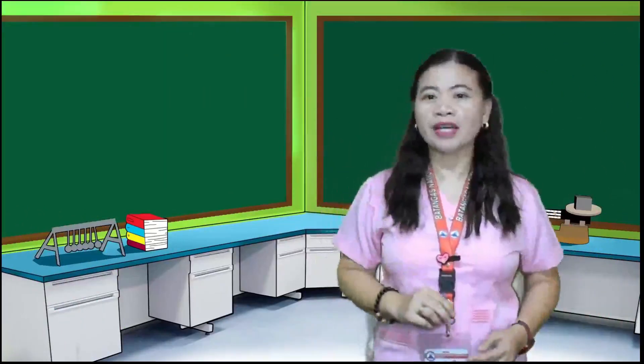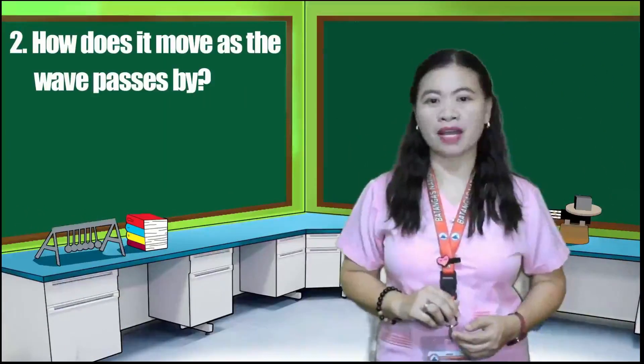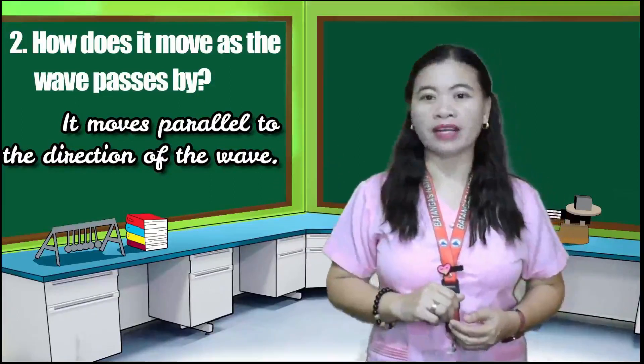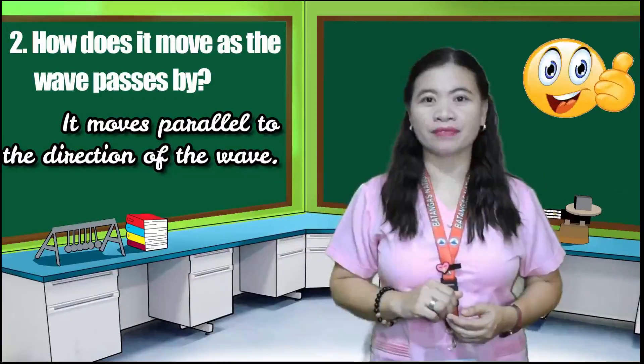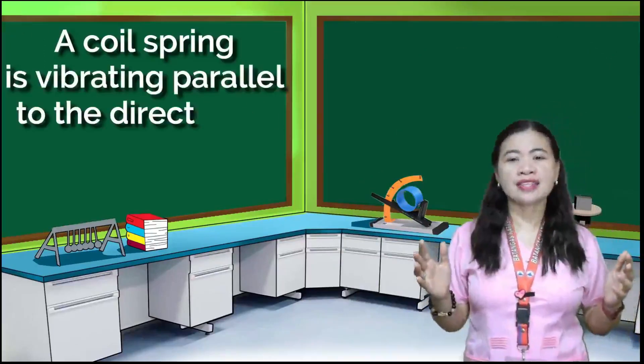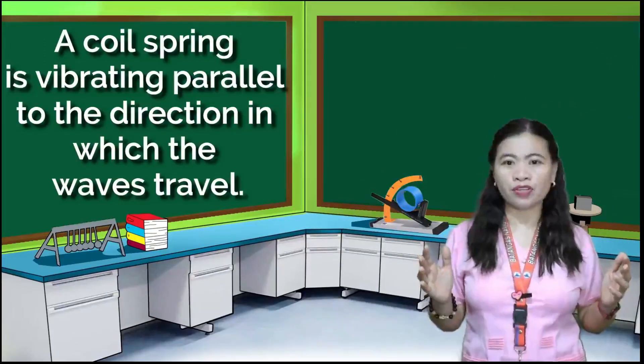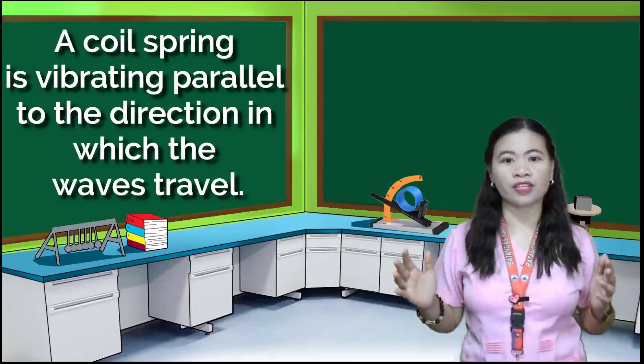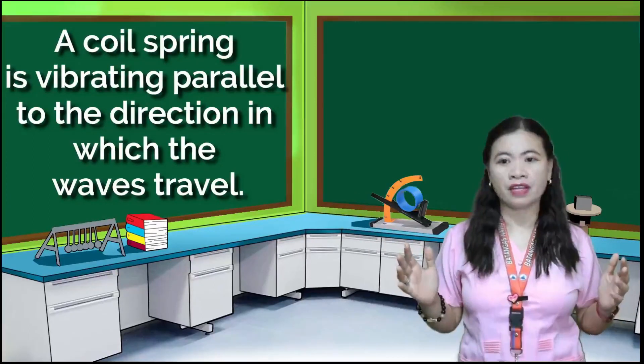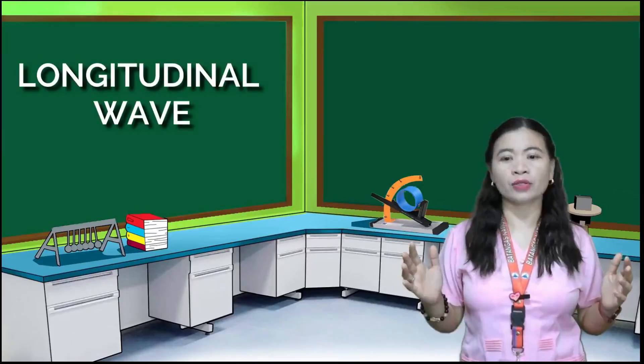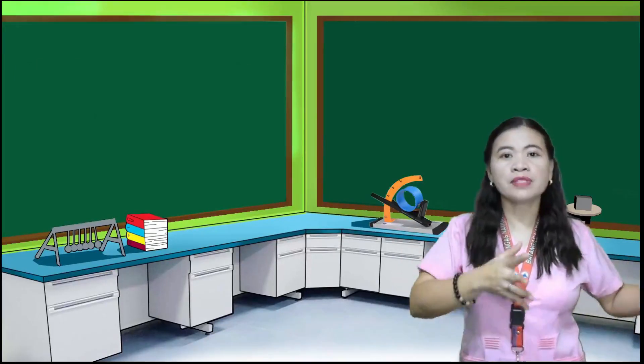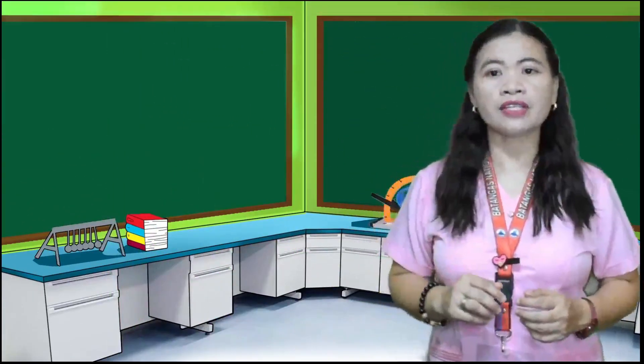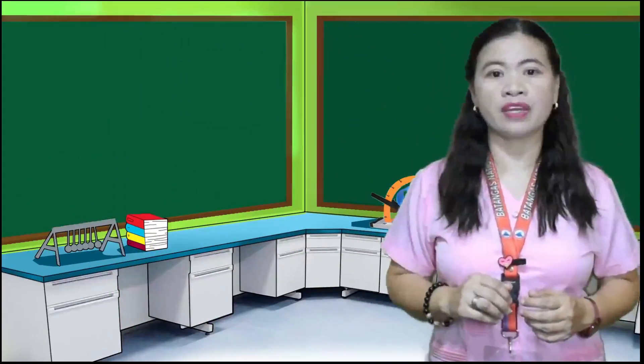Number two, how does it move as the wave passes by? Well said. It moves parallel to the direction of the wave. Therefore, in this activity, each portion of the coil spring is vibrating parallel to the direction in which the wave travel. So, it is longitudinal wave. Waves move back and forth.